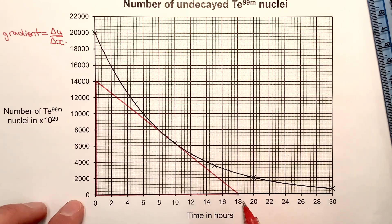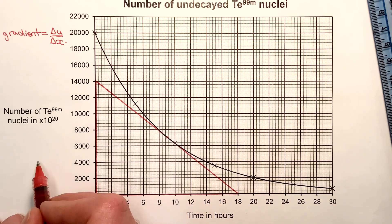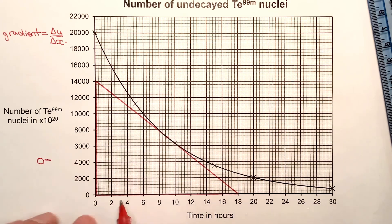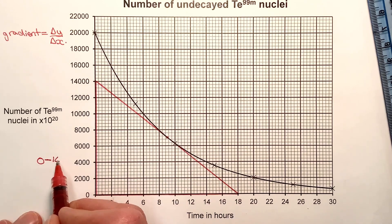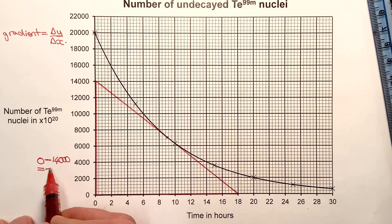To work out the change in the vertical, I need to look at my final vertical value, which is 0. So I do 0 minus my starting vertical value, which is 14,000, giving me minus 14,000. However, I've made a little mistake.